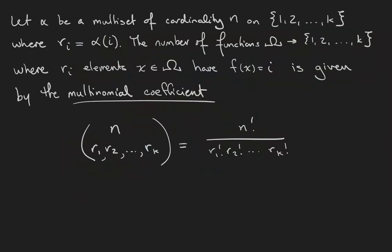Here's our definition. Let α be a multiset of cardinality n on the set {1, ..., k}, and we'll write rᵢ for the multiplicity of each number. The number of functions from Ω to {1, ..., k} where rᵢ elements x have f(x) = i is given by the multinomial coefficient n!/(r₁!·r₂!·...·rₖ!), which we read as 'n choose r₁, r₂, ..., rₖ'.